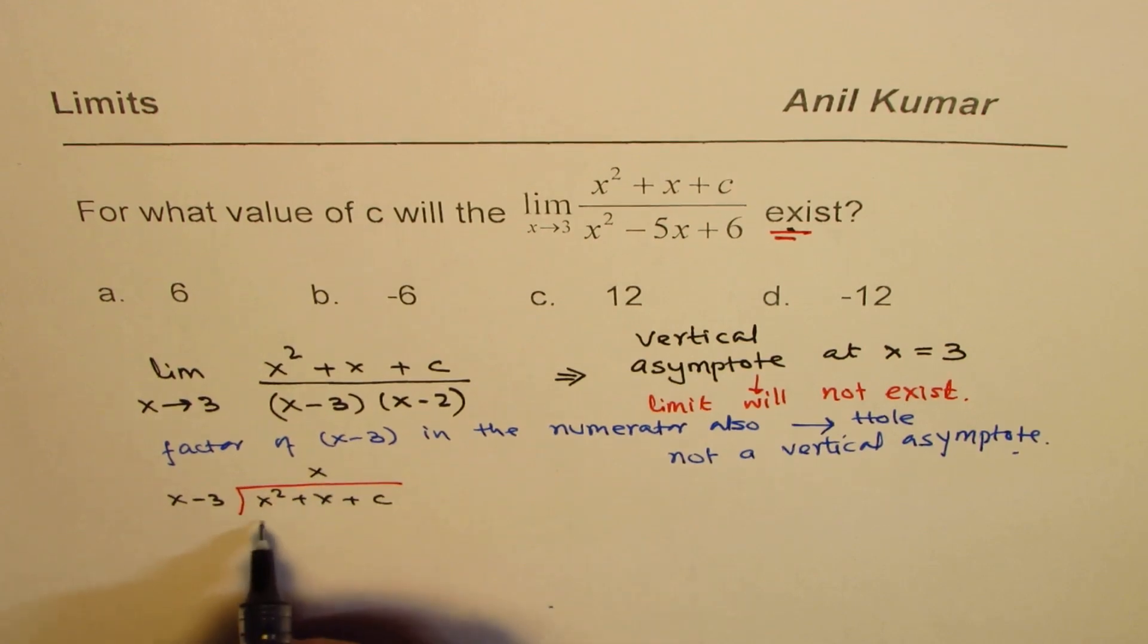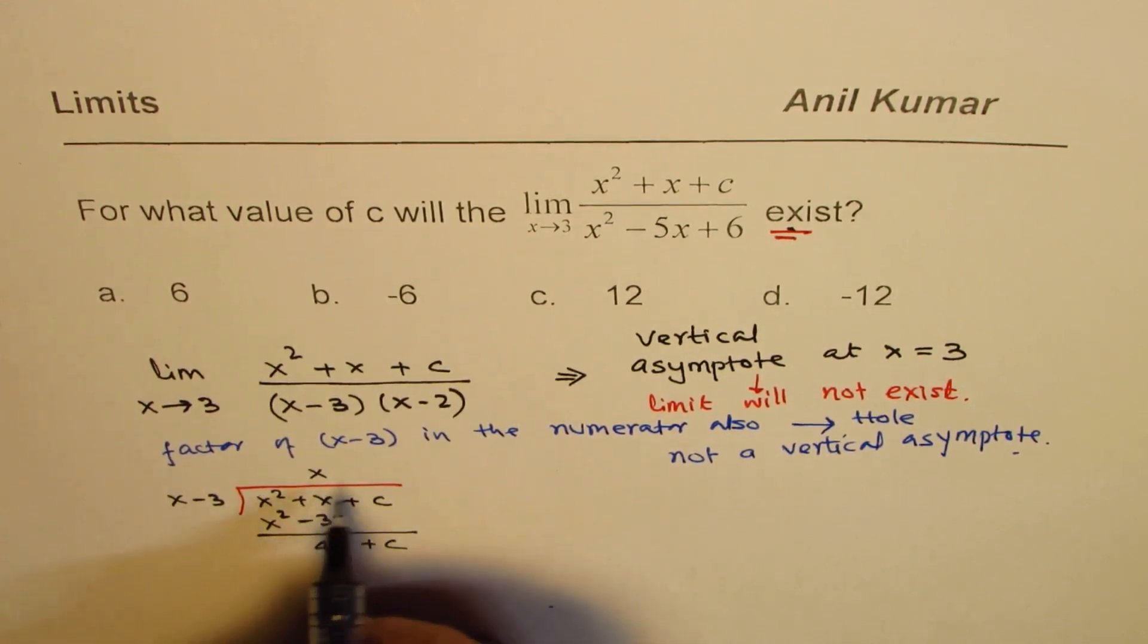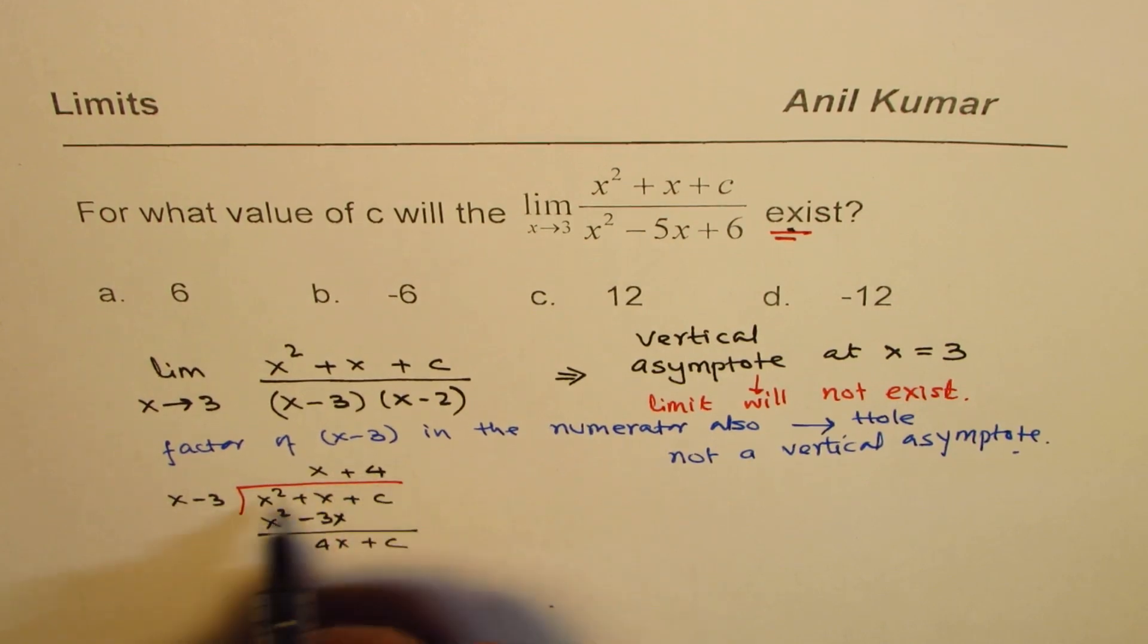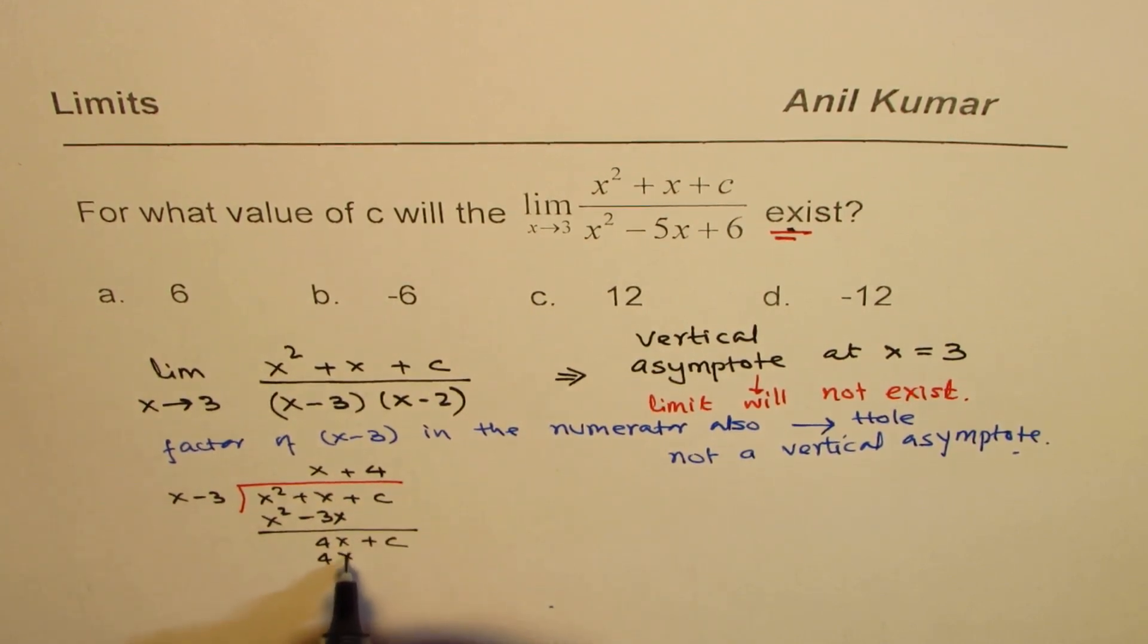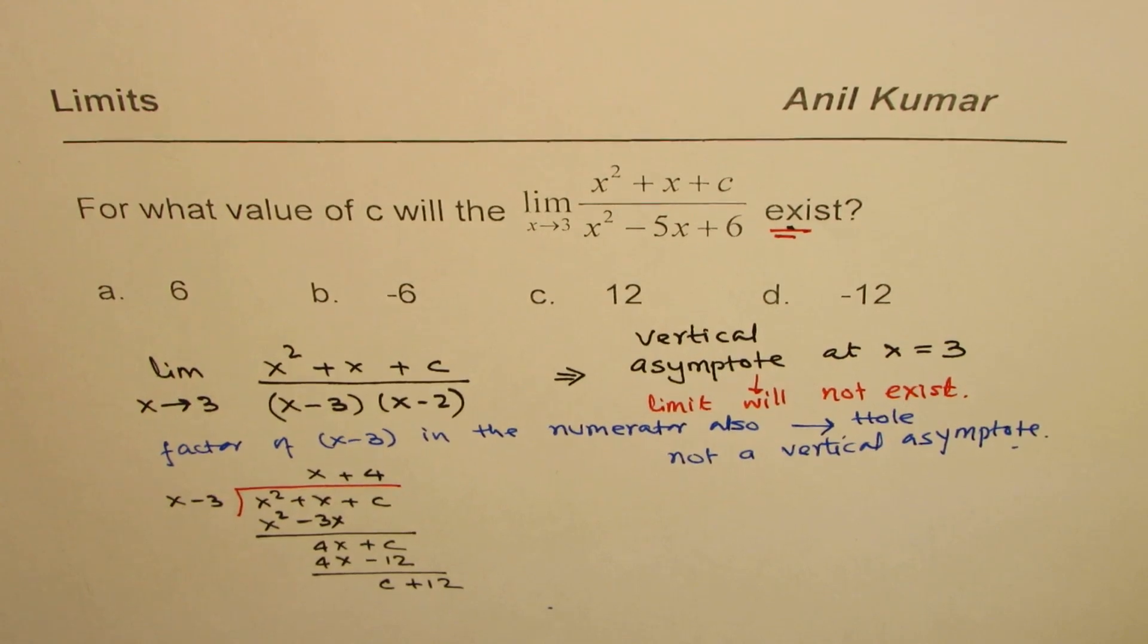Let's divide. If you divide, you get x times, we want to get rid of x squared, x squared minus 3x. When you take away, you get 4x plus c, and then we'll do plus 4 times. That gives you 4x minus 12. When you take away, you get c plus 12. So the remainder is c plus 12.